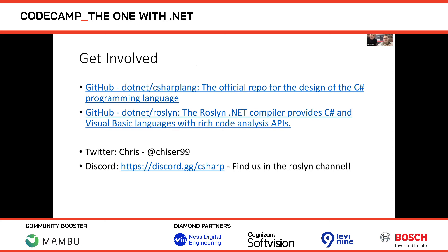On dotnet/csharplang there are issues — reserved for fully-specified features with community development — and Discussions, a newer GitHub feature for more freeform idea sharing. Often a proposed idea turns out to be similar to something already discussed, and the community helps merge ideas. Discussions are a good starting point. The language is mature, so many ideas have already been explored, and you can often find related prior discussions to build on.